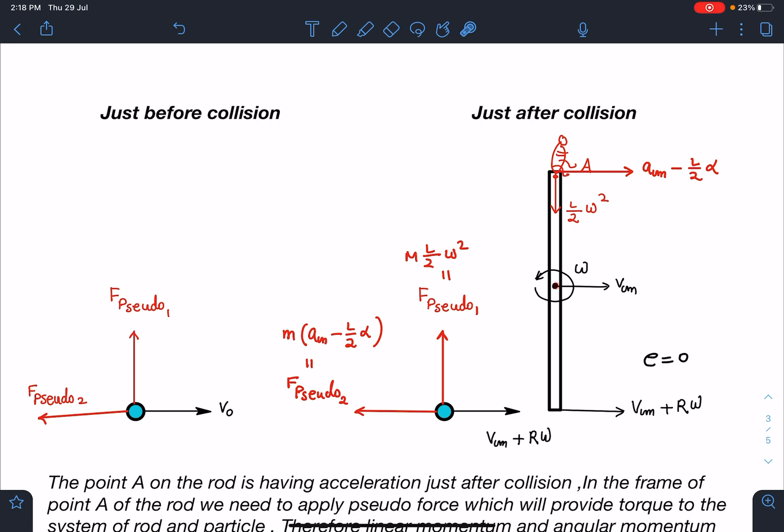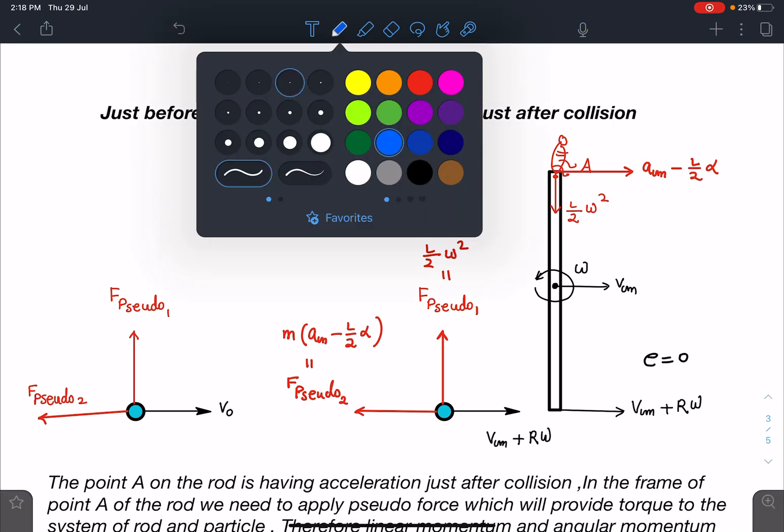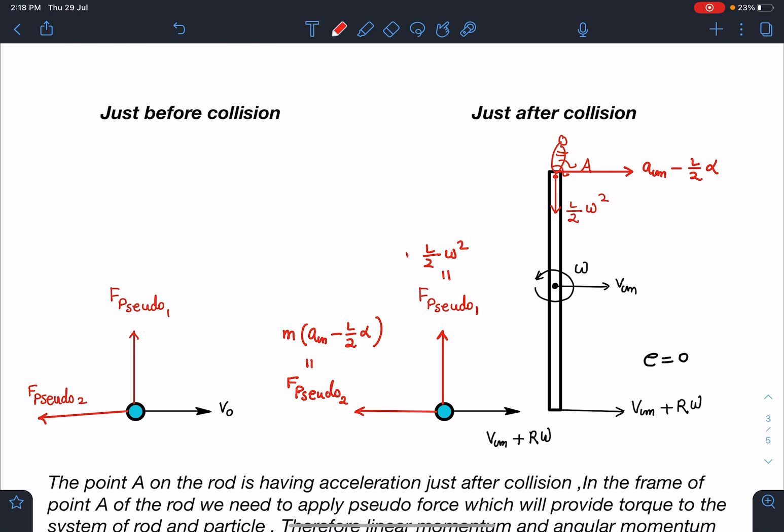On the particle especially, you can see you must apply at this body also. On the particle, corresponding to this l by 2 omega squared, this will be m l by 2 omega squared. Due to this horizontal acceleration, the pseudo force component will be m times ACM minus l by 2 alpha. By the way guys, this is small m because we are writing on the particle.